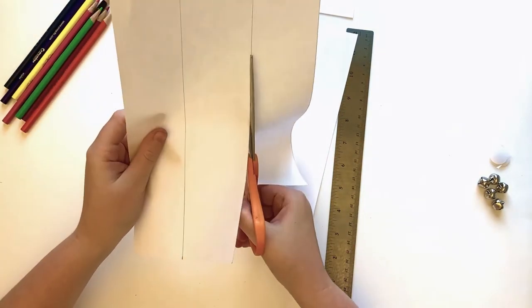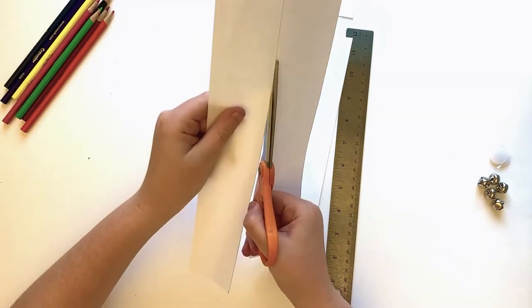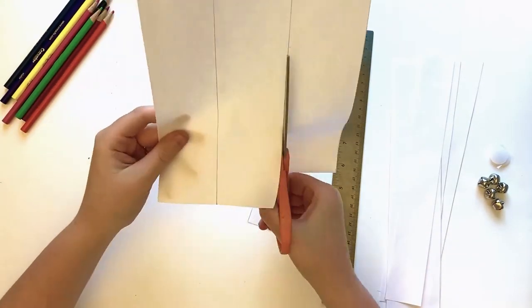Cut both sheets along the lines drawn. You should have two sets of paper strips, each with one small strip and three large strips of paper per cuff.